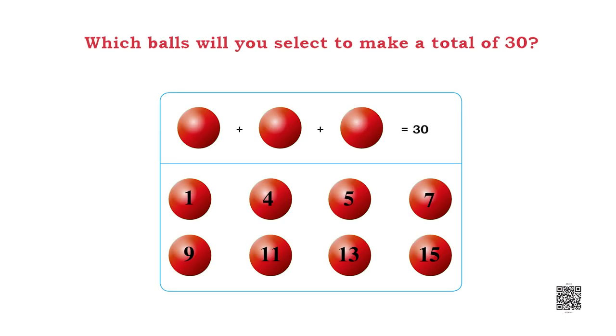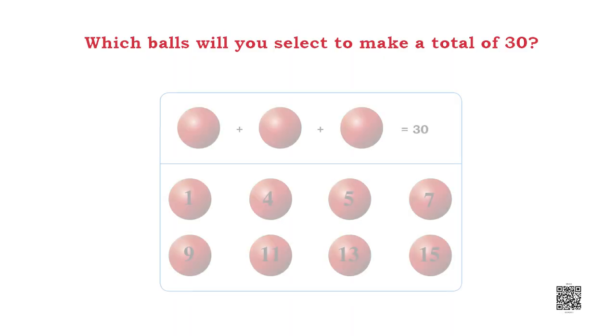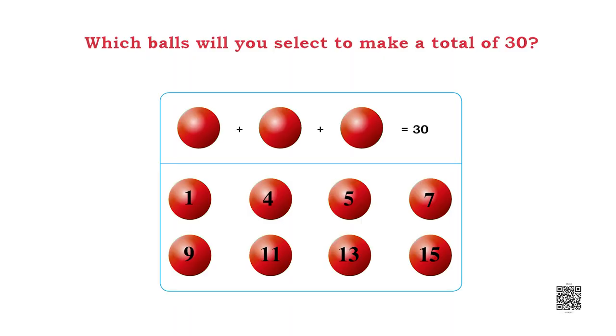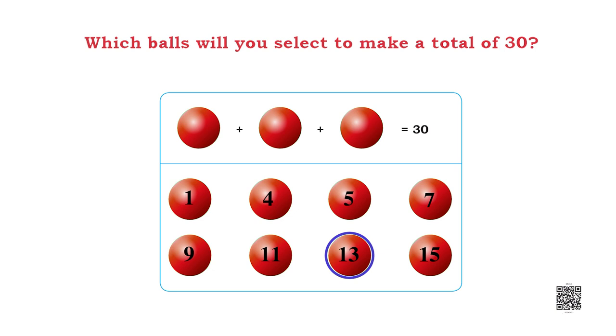Which balls will you select to make a total of 30? Here there are 11 circles given inside a rectangular box. Three circles are blank and after adding these three circles we get the total of 30. There are 8 more circles given next to these three circles, with a number in each circle: 1, 4, 5, 7, 9, 11, 13 and 15.